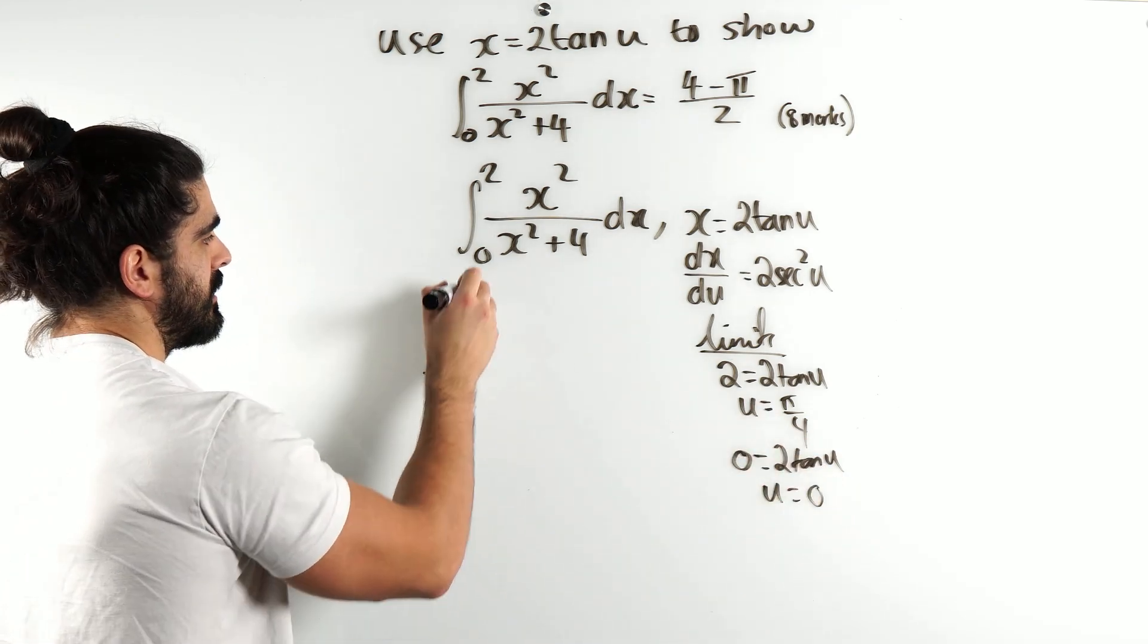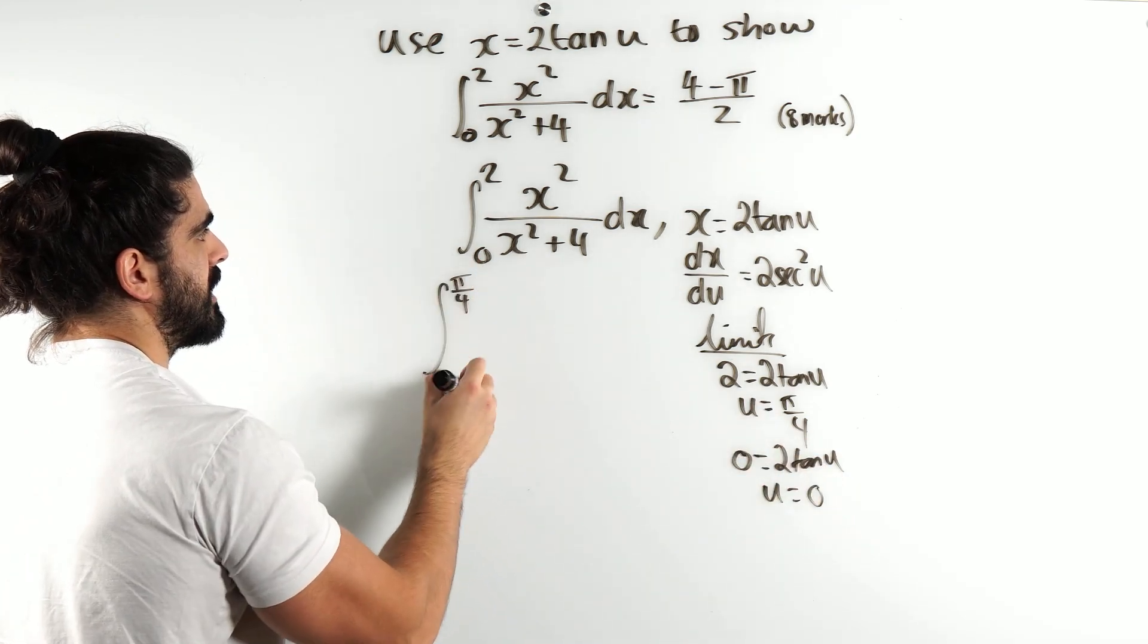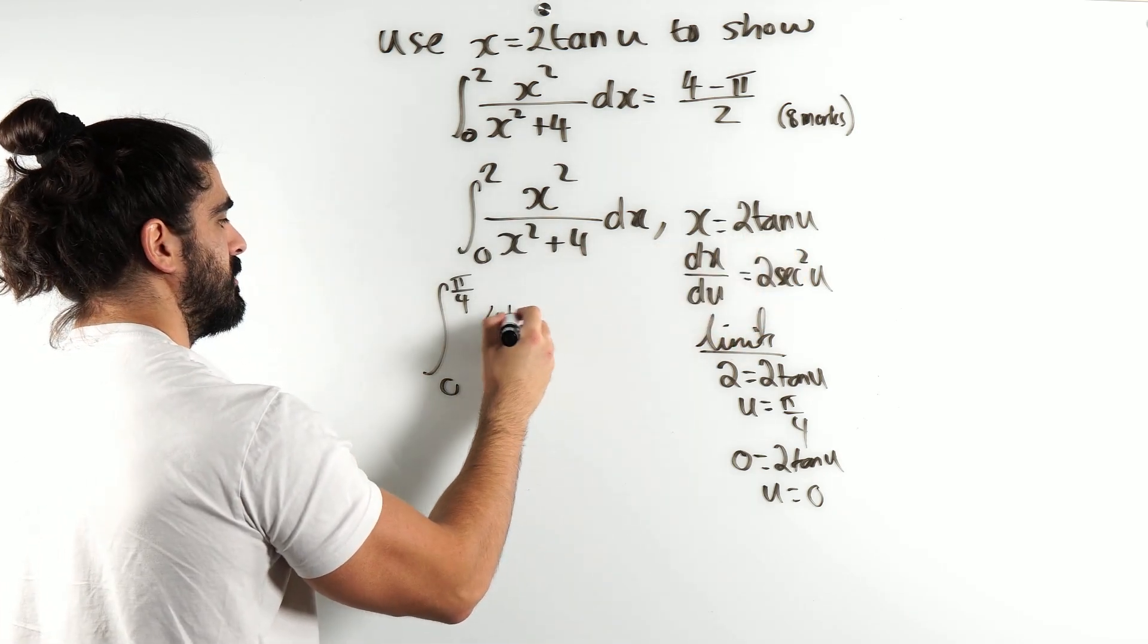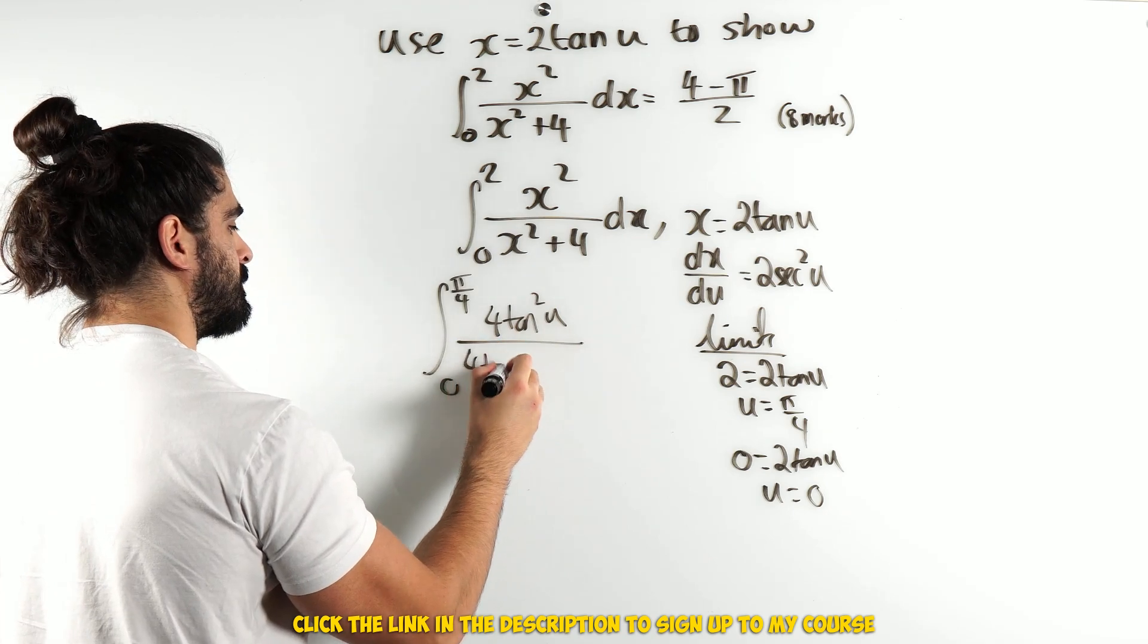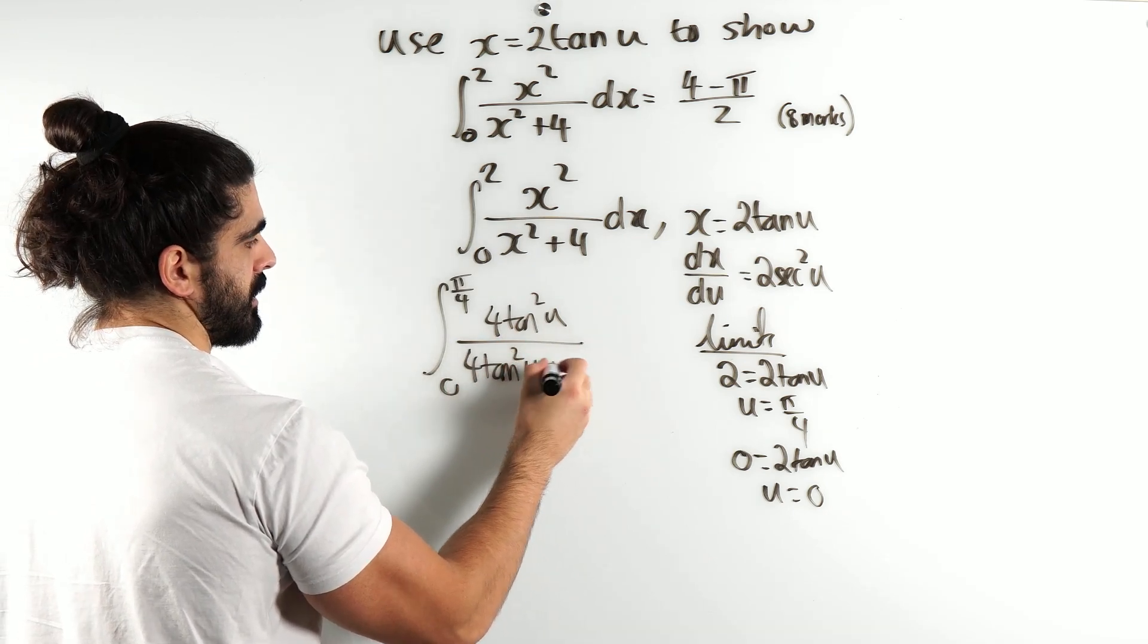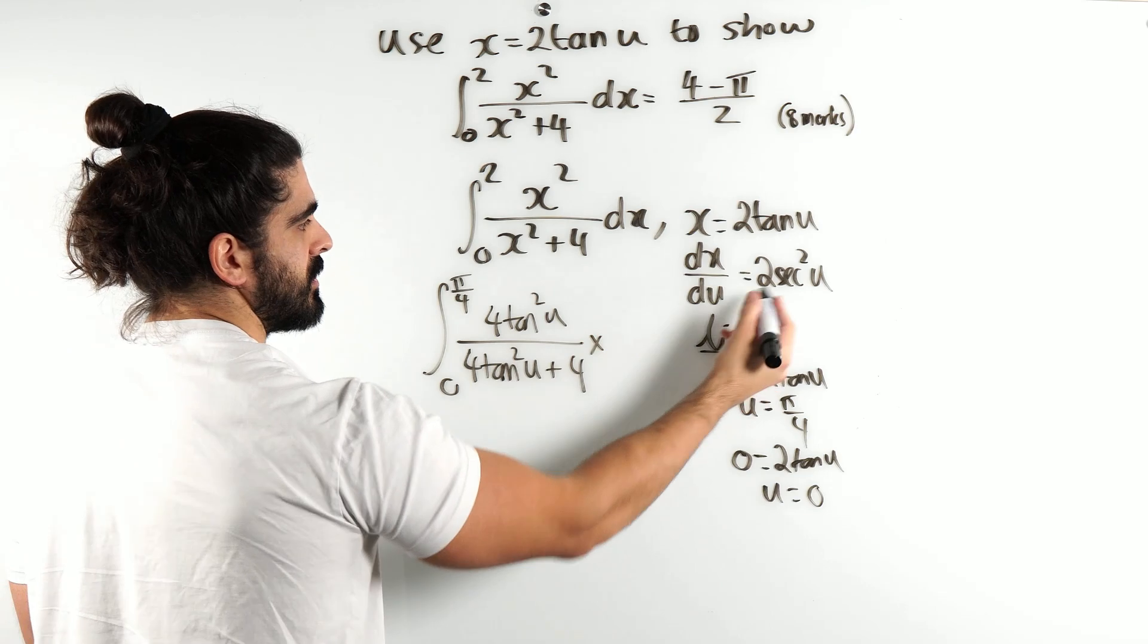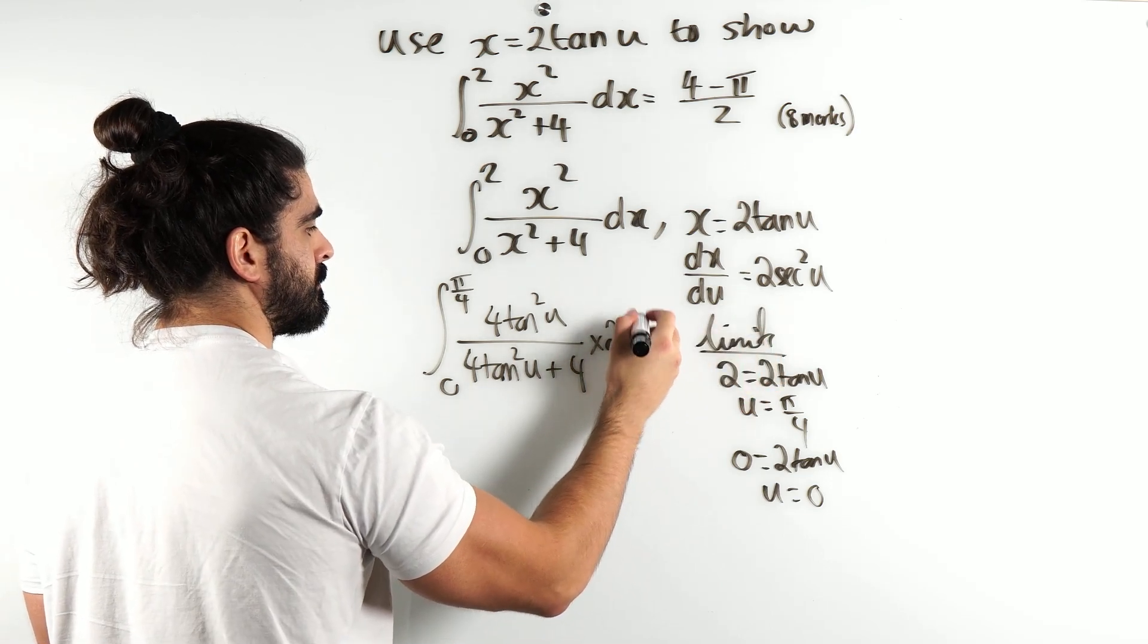So we're integrating π/4 to 0. x squared, when you square this, you get 4tan²(u) divided by another 4tan²(u) plus 4, times 2sec²(u)du.